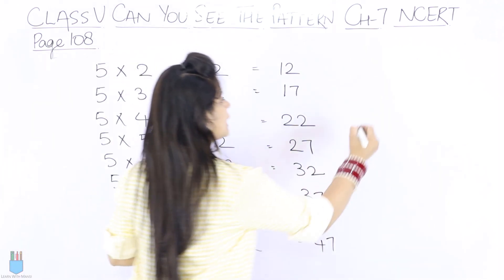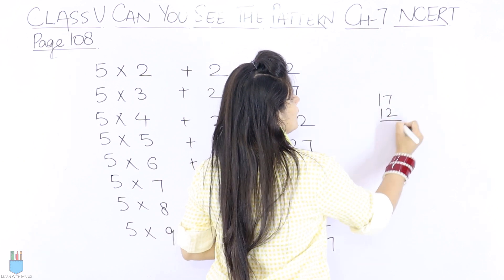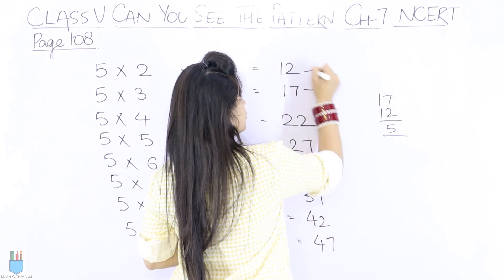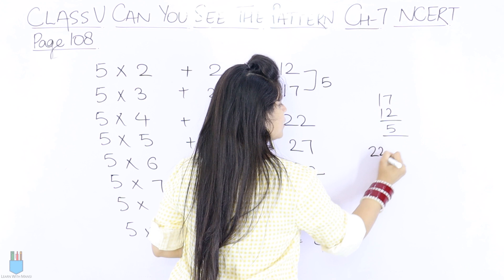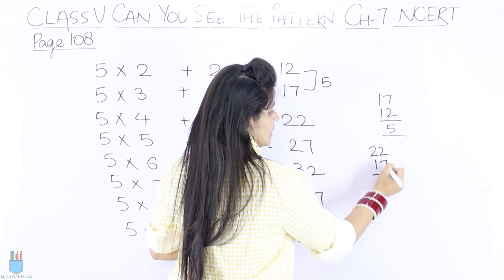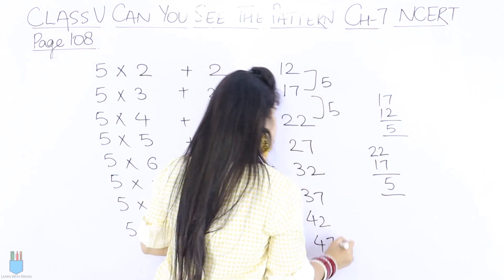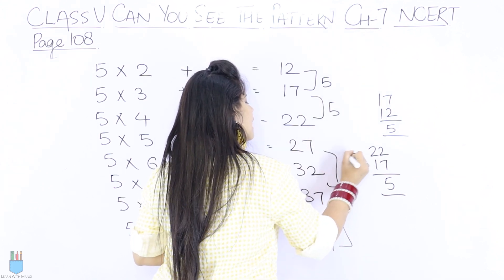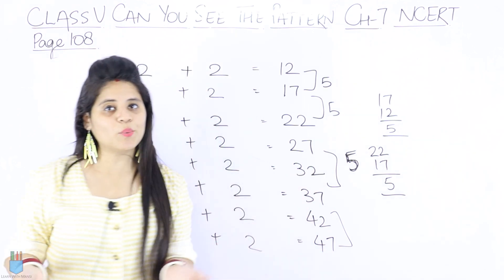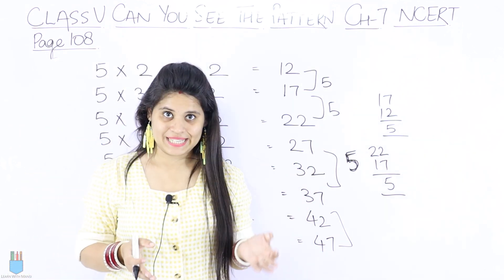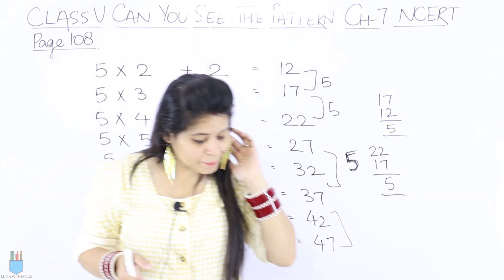So let's check this here. So 17 minus 12 is 5. Then 22 minus 17 is 5. So again 5. So you will notice here the difference is 5, everywhere.